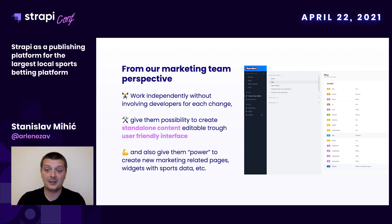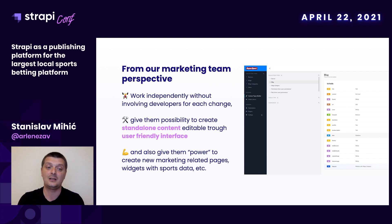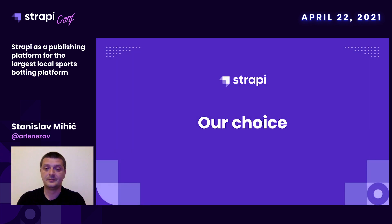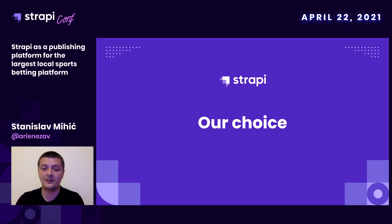From our marketing perspective — the team responsible for adding and editing content — we would like to give them the power to work independently without involving developers for each change, give them the possibility to create standalone content editable through a user-friendly interface, and also give them power to create new marketing-related pages, widgets with sports data, score tables, and similar. So our logical choice, after reviewing all available CMS solutions on the market today, was Strapi — it seems a very good fit to play with our product.